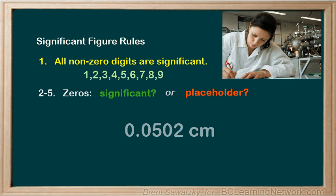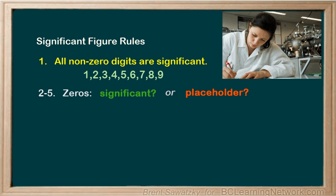What if we had a zero in the middle of some significant digits, like 0.0502? This zero right in the middle isn't there to show magnitude — it's not a placeholder, as any other digit could have been there, but they wrote a zero. Therefore, it must be part of the accuracy; it must be significant and not a placeholder. So any zero mixed in between other non-zero digits is definitely significant. This example has three sig figs. That covers the zeros in small numbers.